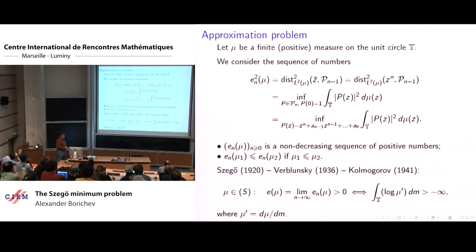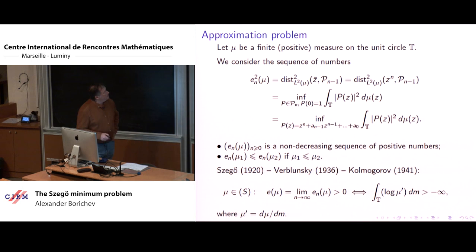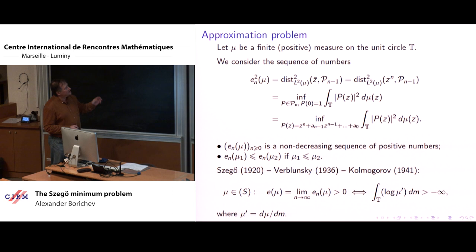So we are given a measure and we obtain a sequence e_n. It's a non-increasing sequence of positive numbers. There is a misprint here — in fact, the sequence strictly decreases unless it has already reached zero. One more trivial remark is that these numbers are monotonic with respect to the measure: if one measure is dominated by another one, then the corresponding coefficients are dominated.